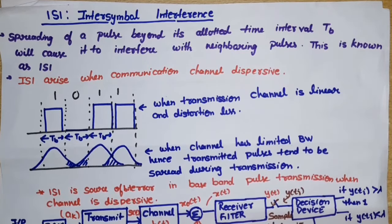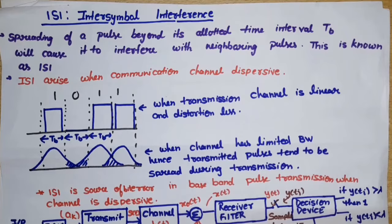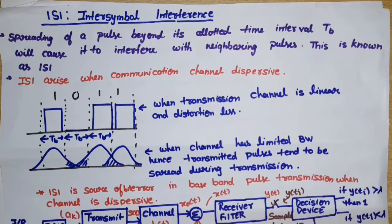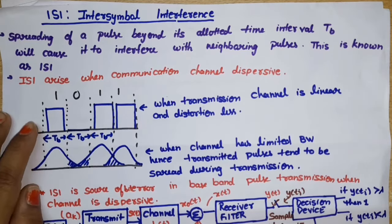In this video lecture on digital communication, we will discuss a new topic: ISI, which means Inter-Symbol Interference. This is not noise — it is interference between the symbols being transmitted. Why does this interference arise? One reason is that if the communication channel is dispersive, the pulses assigned a certain bit duration spread beyond their allotted duration and interfere with each other.